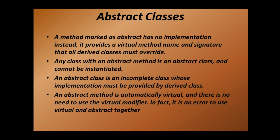Let's go through our slides first. A method marked as abstract has no implementation. Instead, it provides a virtual method name and signature that all derived classes must override. You can understand abstract classes or abstract methods as a combination of interfaces and virtual methods. I have covered both of these topics in my previous lectures, so before continuing you must watch those videos to get a firm understanding — you need to understand virtual methods and interfaces in C# before continuing.